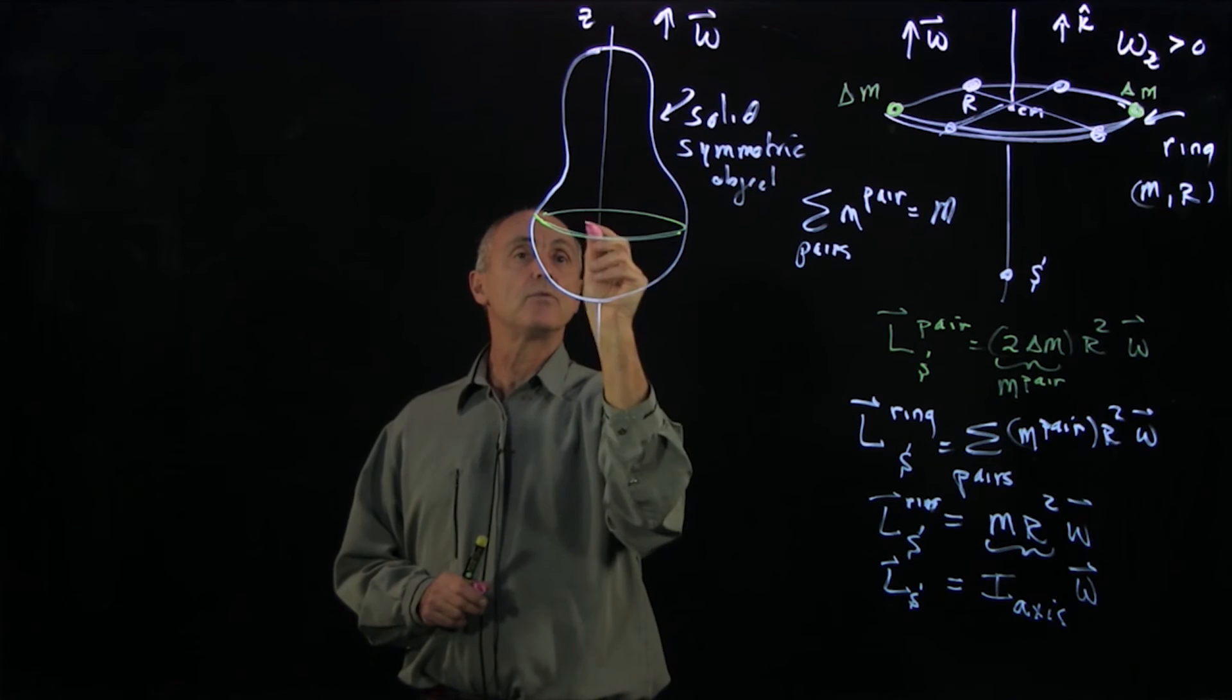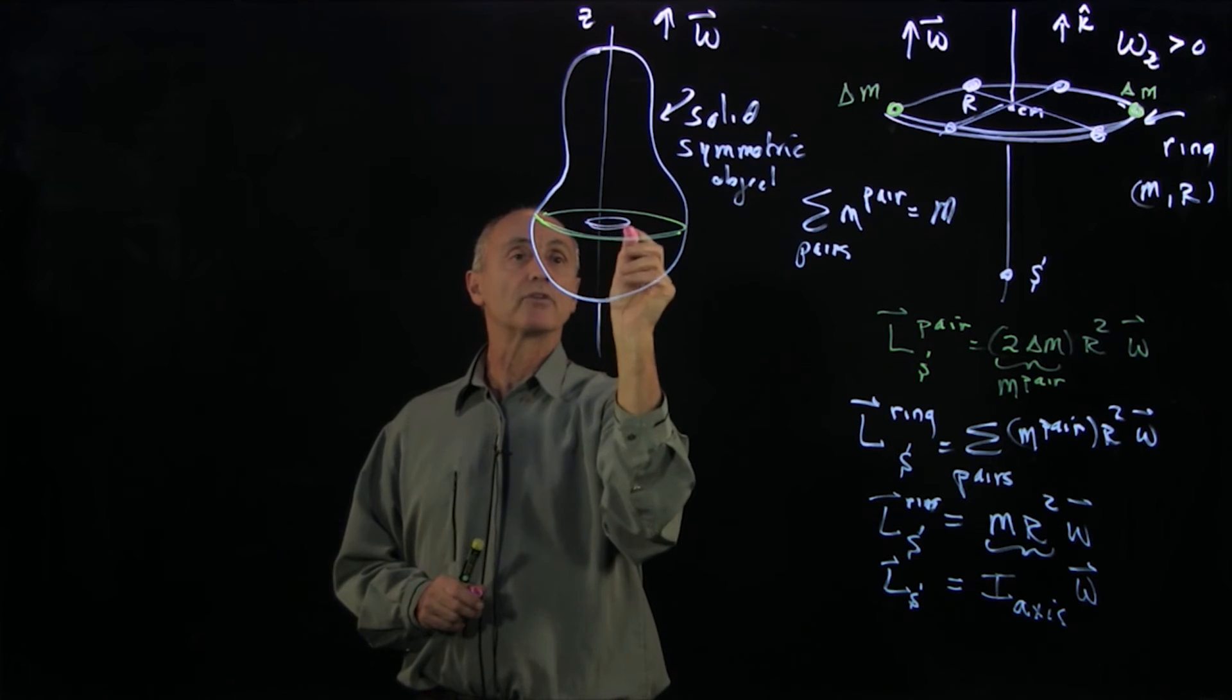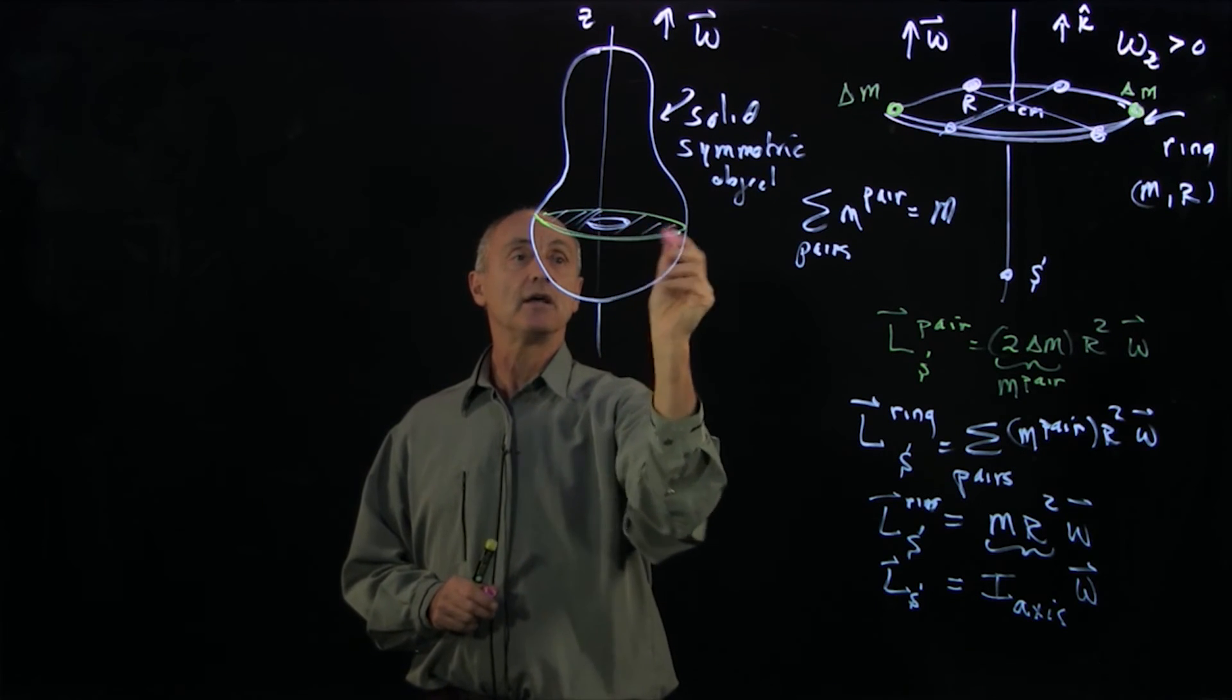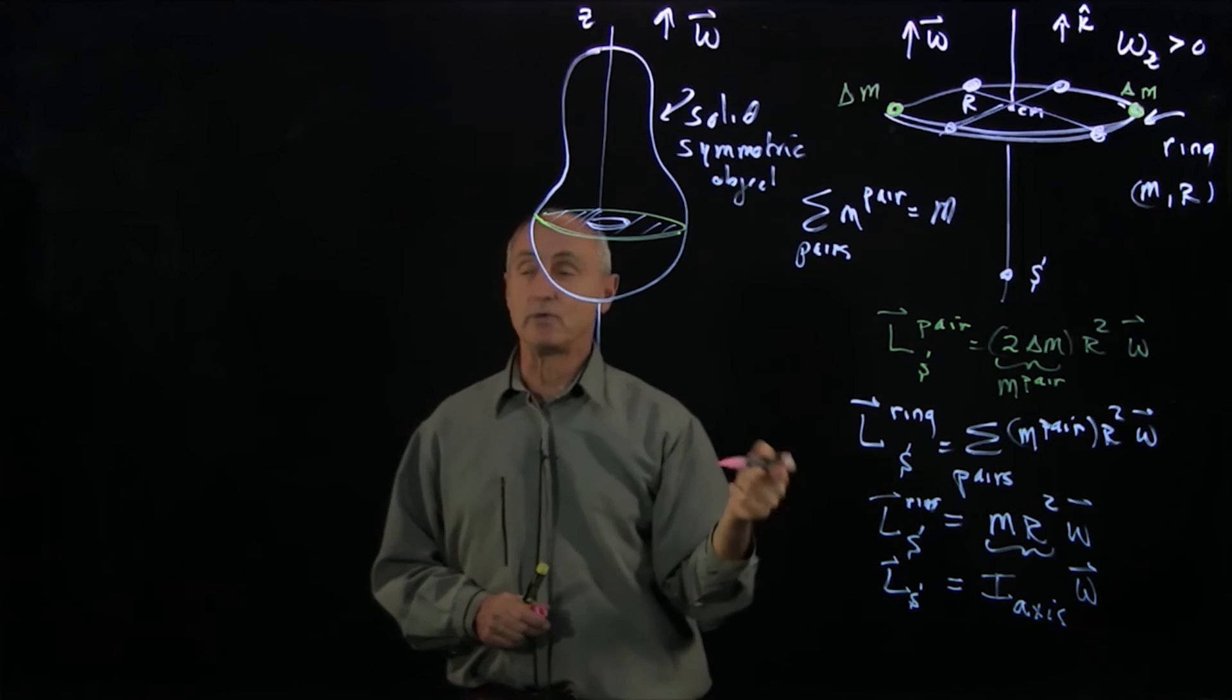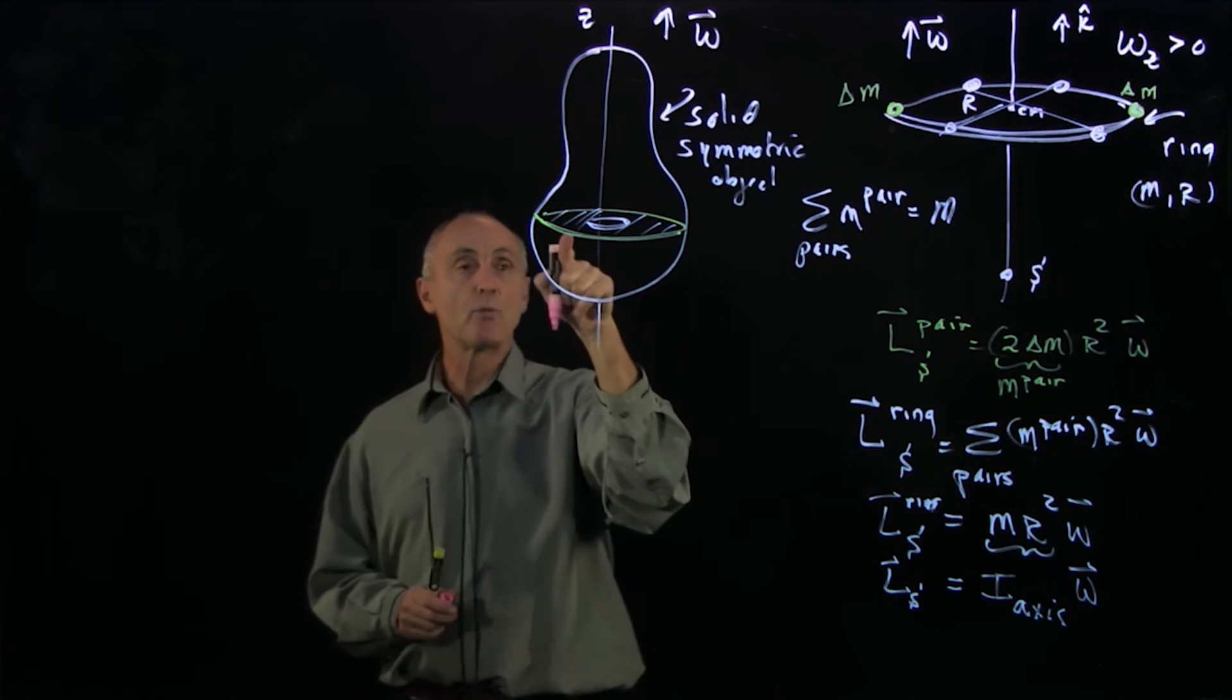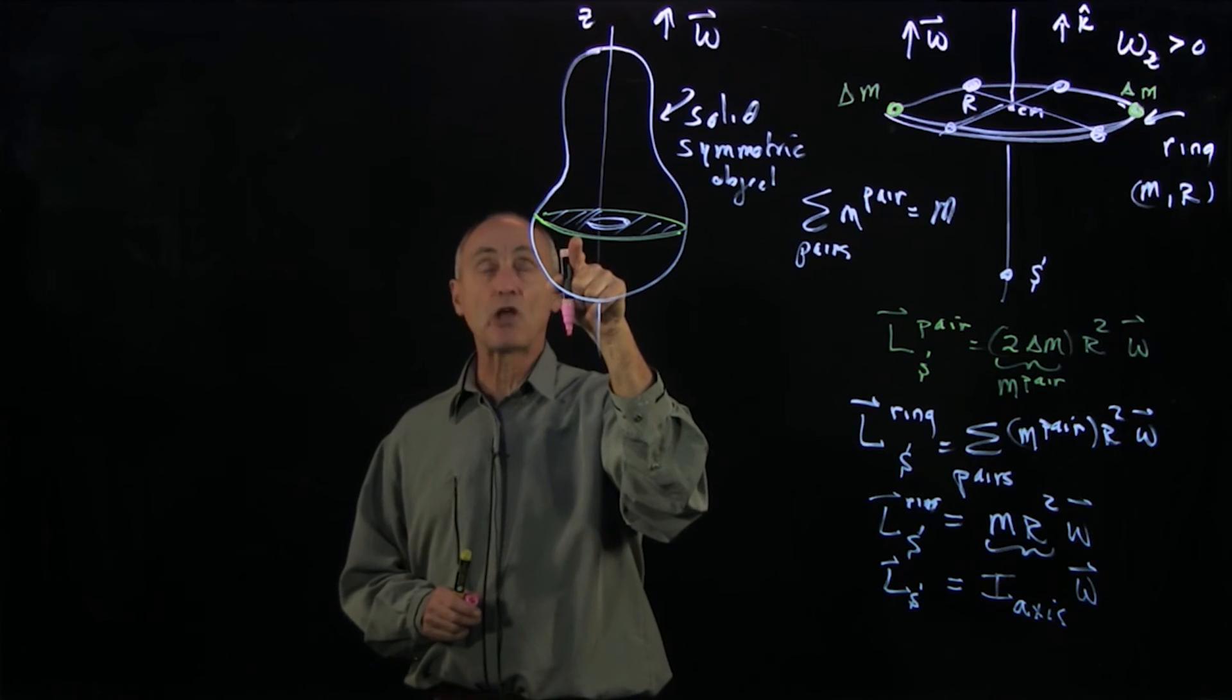And then inside the ring is just more rings. So the whole disk here is just a superposition of rings.